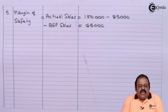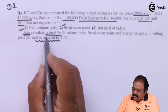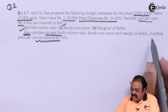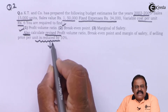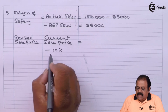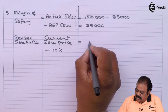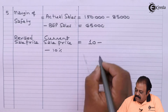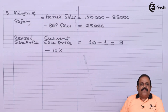These calculations were done for the current year. Now we also need to calculate the revised PV ratio, break-even point, and margin of safety if the selling price per unit is reduced by 10%. The revised sale price is current sale price ₹10 minus 10% of ₹10, which is ₹1, giving us a revised sale price of ₹9.